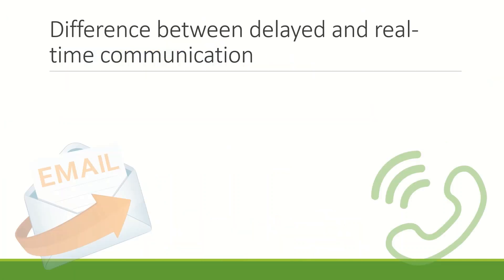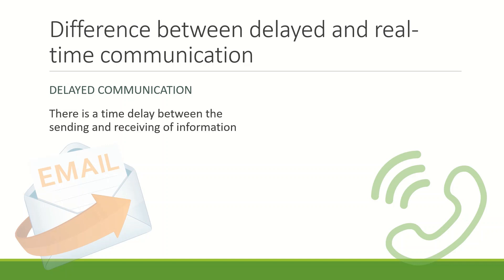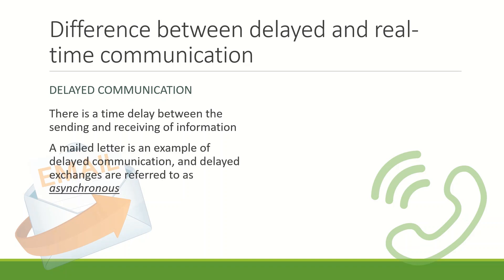There are two essential timeframes for communications: delayed and real-time. In delayed communication, there is a time delay between the sending and receiving of information. A mail letter is an example of delayed communication. In digital communications, delayed exchanges are referred to as asynchronous.